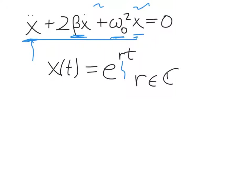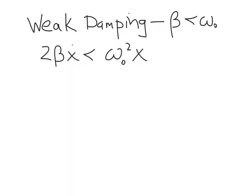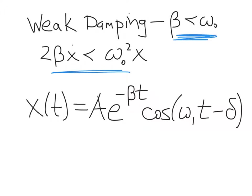We start with weak damping — the idea that the damping term in the differential equation is small compared to the spring force term. The important condition is that beta is smaller than omega naught. In that case, you get a solution: x(t) = A e^(−βt) cos(ω₁t − δ).